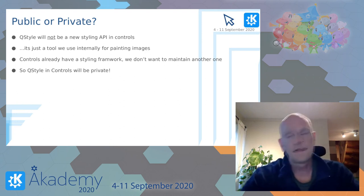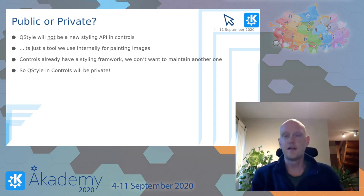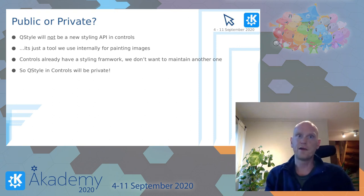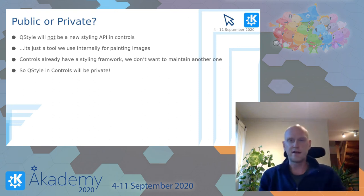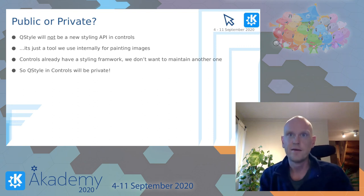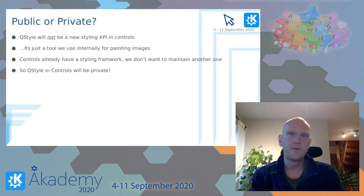That brings me to an important point. We don't want to introduce a second API for styling in Controls. It already has a great styling API from before, and we don't want to support and maintain a second styling API. So for that reason, the copied QStyle would be a private implementation detail in the Controls repo and not the public styling API for everyone to use.